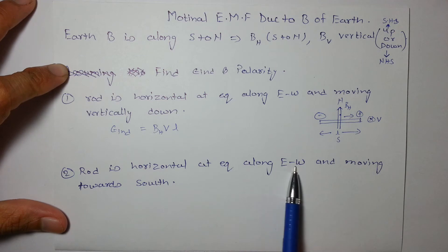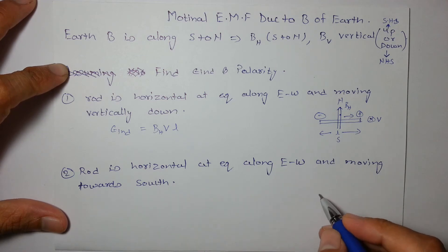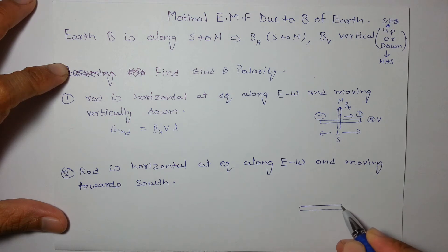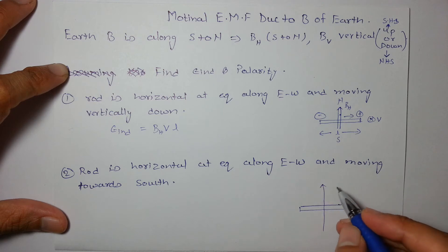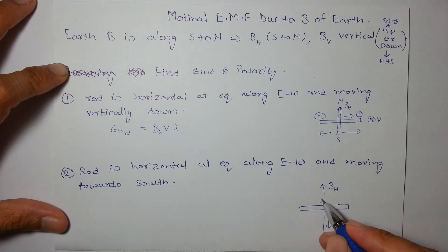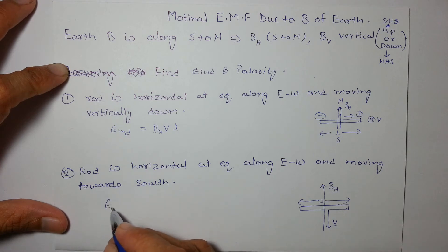Moving on to the next example: a rod is horizontal at the equator along east-west, but now moving towards south. Here V and BH are parallel (or anti-parallel), so the EMF induced will be zero.